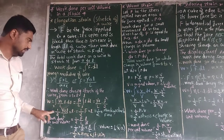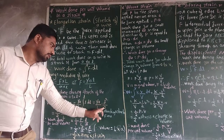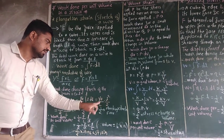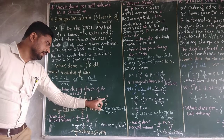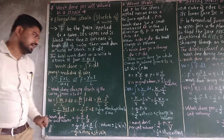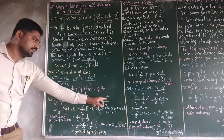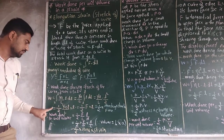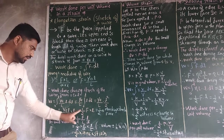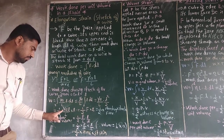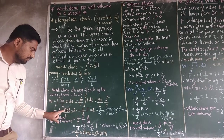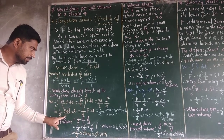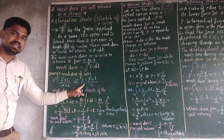Therefore W equals (1/2)·(Y·A·L / capital L)·L. Writing L squared as L into L, you get W equals (1/2)·(Y·A·L / capital L)·L. Now, Y·A·L divided by capital L is equal to F.